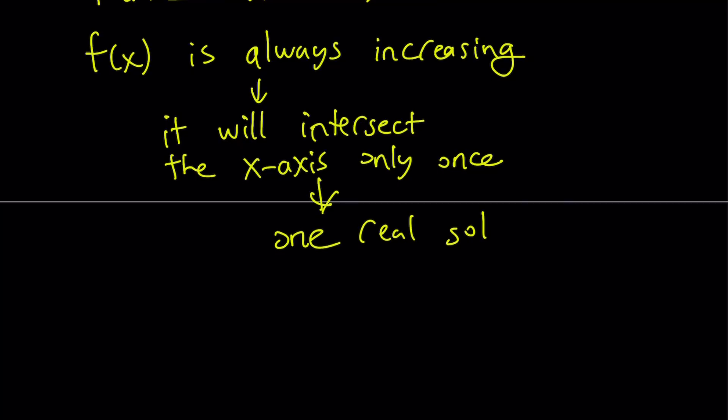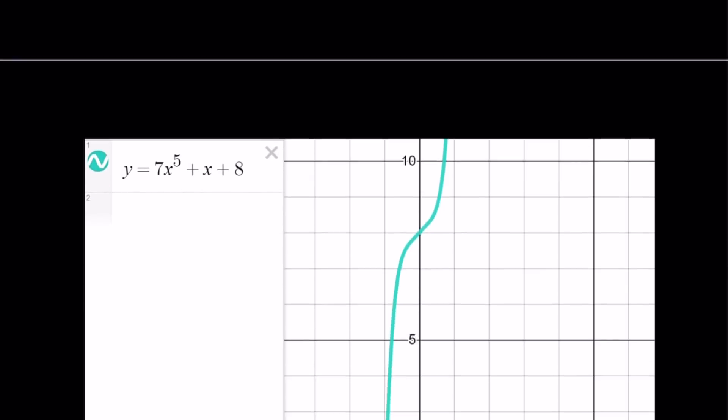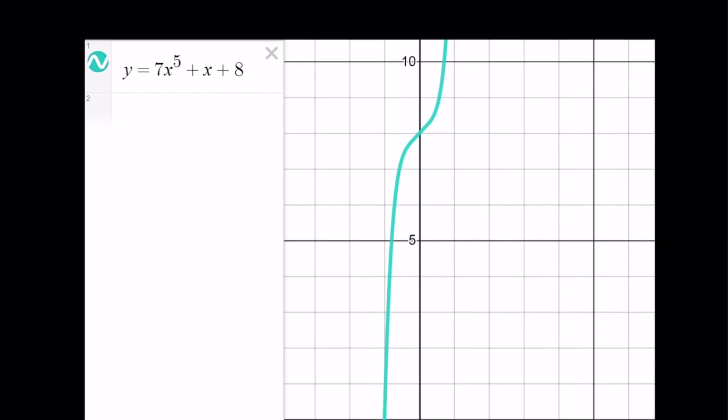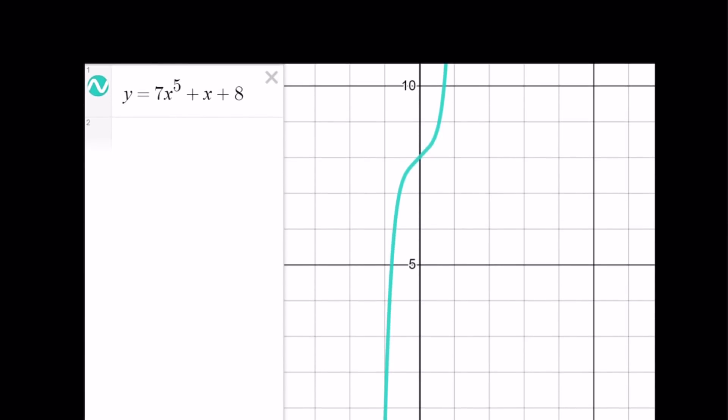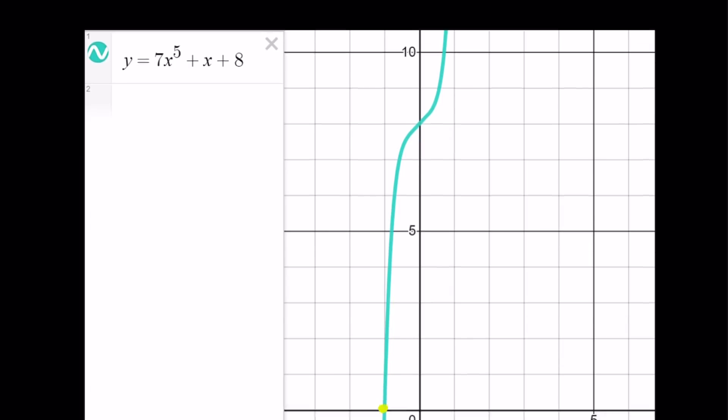And I'll show you the graph of it, so you'll see what it looks like. You could also graph it too easily, right? And here we go. Here's our function, 7x to the 5th power plus x plus 8. And as you can see here, we only got one solution, and that will be x equals negative 1.